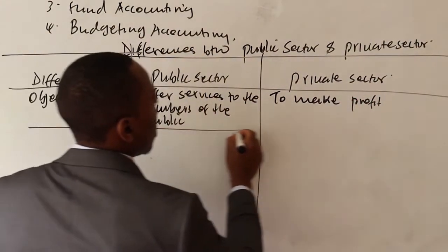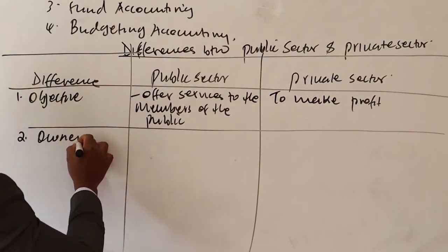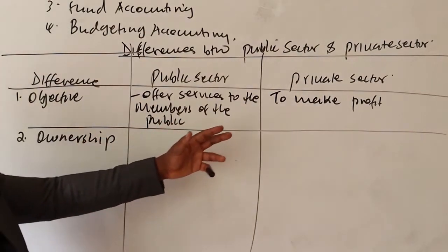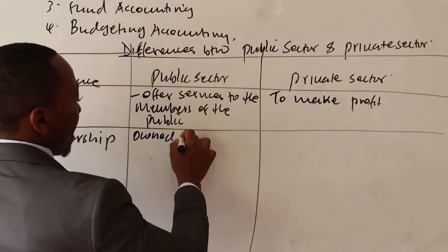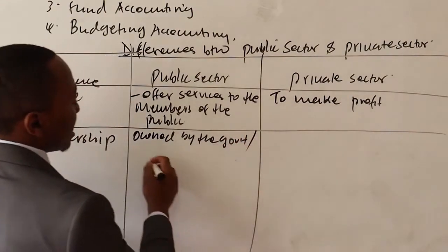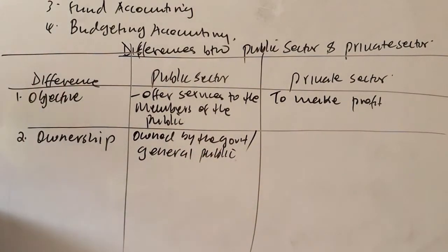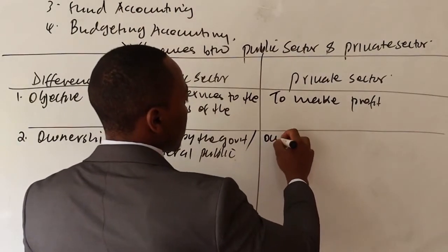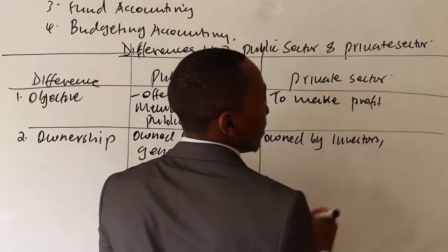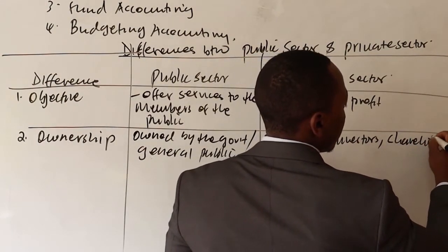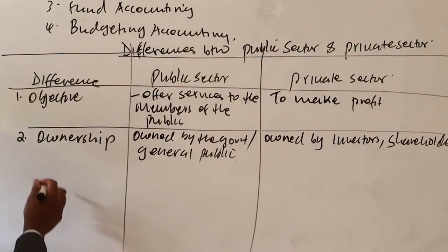Another difference is about ownership. The public sector is owned by the government or the general public. But for the private sector, they are owned by shareholders, investors, or entrepreneurs.